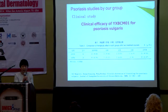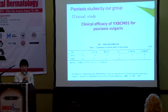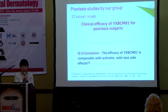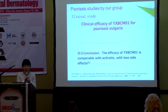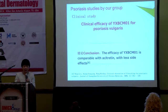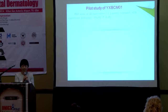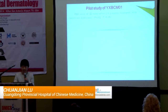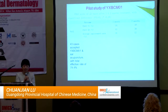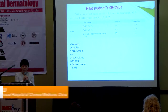The second area we conducted is clinical study. We conducted a clinical study to evaluate the clinical efficacy of Yinxieling CM01, one of the herbal prescriptions used in clinical work for psoriasis vulgaris. We concluded that the efficacy of Yinxieling CM01 is comparable with acitretin with fewer side effects. We also conducted several pilot studies: one among 22 cases treated by this formula showed PASI scores reduced significantly after one and two months; another among 43 cases receiving Yinxieling CM01 combined with ear acupuncture showed a total effective rate of 74%.